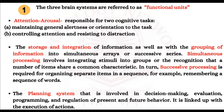These brain systems are referred to as functional units. The first brain system is attention-arousal. It is responsible for two cognitive tasks: maintaining general alertness of the person while doing a task, and controlling attention and resisting distraction. So attention-arousal maintains alertness throughout and also controls attention, resisting any kind of distraction.